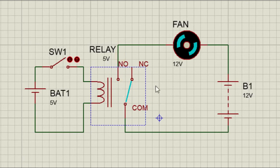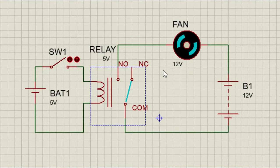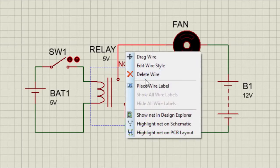When the coil of the relay is not energized, the armature will be connected to the normally closed terminal. If you want to connect a device that will always be on when the relay is not energized, then you can connect it to the common and the normally closed terminal of the relay.